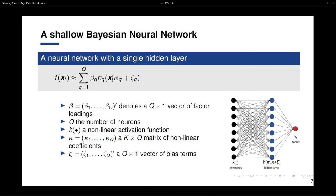We chose to use neural networks — specifically a shallow neural network with one hidden layer, though we also extend to the deep version in the paper. The ingredients of this neural network are: a vector of factor loadings beta, the nonlinear function h, a matrix of nonlinear coefficients kappa, and a vector of bias terms zeta. In the machine learning literature, kappa and beta are called weights, zeta is the bias term, and h is the activation function.